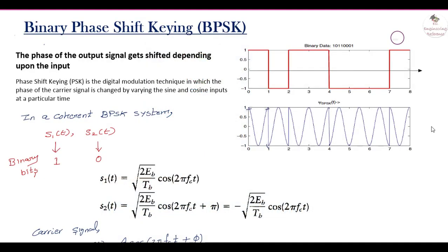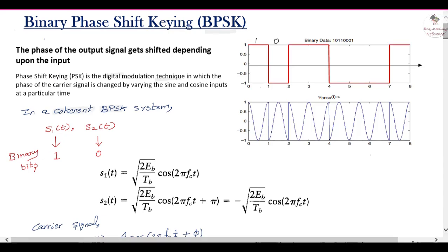In this video we are going to study BPSK — Binary Phase Shift Keying. Phase shift keying is a digital modulation technique where the phase angle of the carrier signal is changed according to the information bits. The information bit can be 1 or 0, and based on this the phase angle changes. As shown in this waveform, for logic 1 and logic 0 there is a phase difference of 180 degrees.